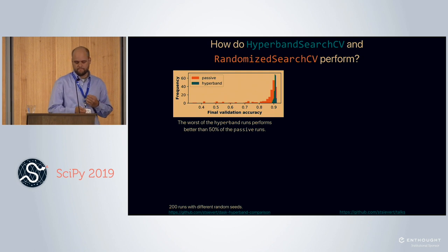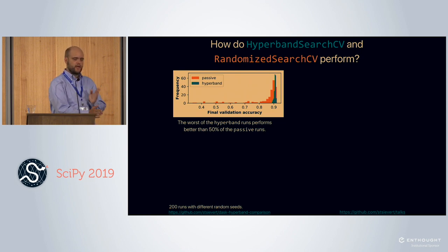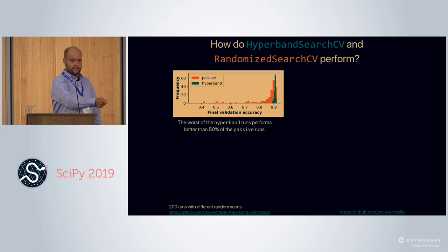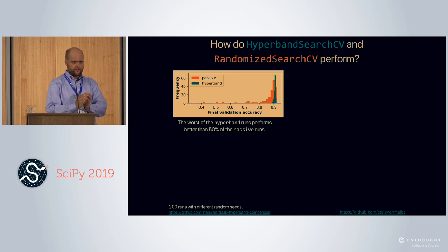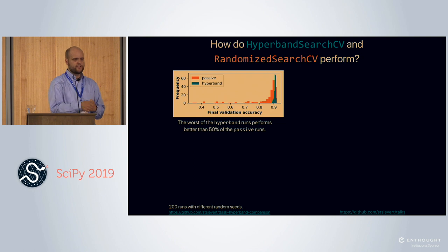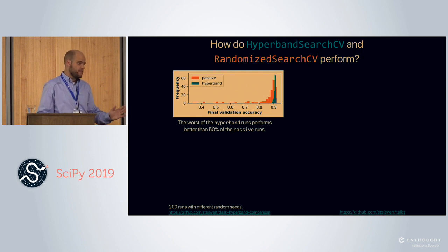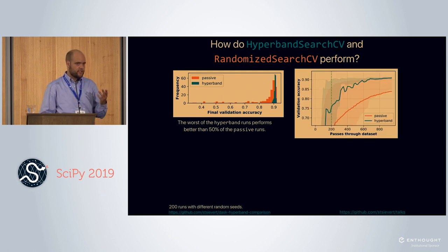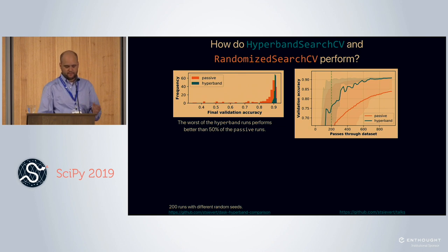I ran this 200 more times. I did 200 runs of Hyperband as well as 200 runs of RandomizedSearchCV. I see that Hyperband tends to find values around 0.9 — 90% accuracy. For the same amount of work, RandomizedSearchCV finds less certain results with more variability. The worst-performing Hyperband run did better than 50% of the RandomizedSearchCV runs. On average, you need three times fewer passes through the data to reach a model of 85% accuracy.